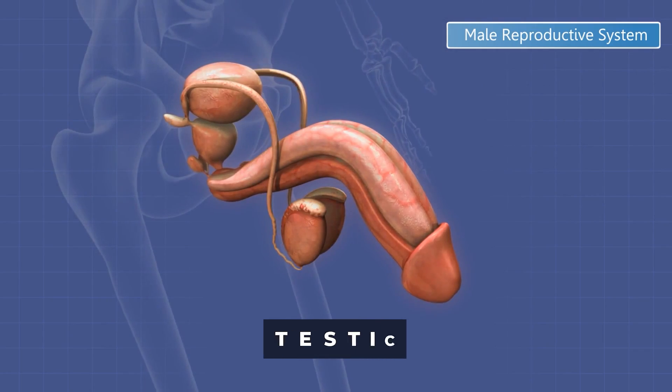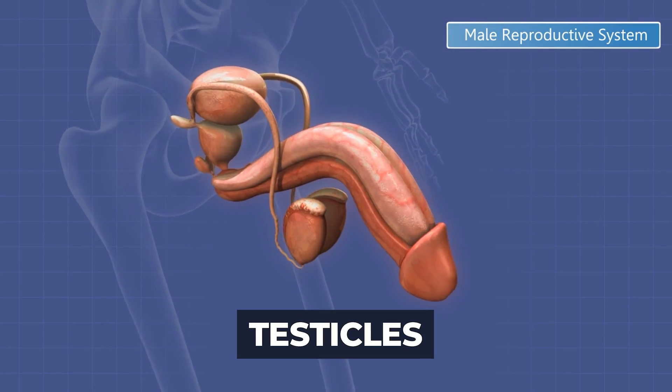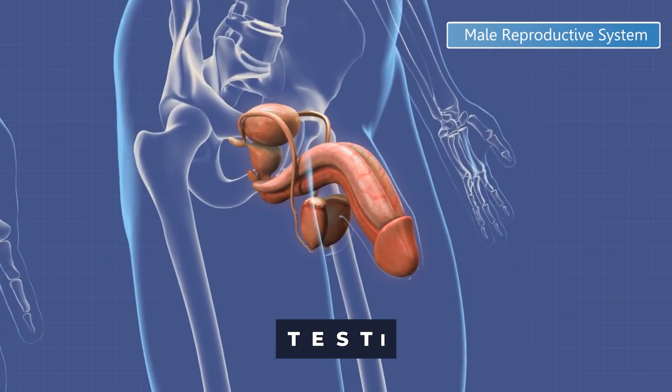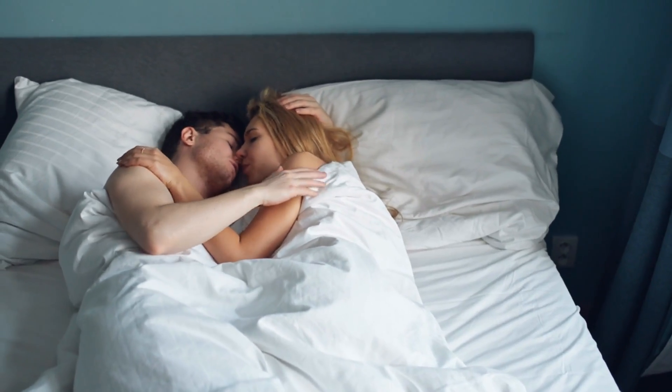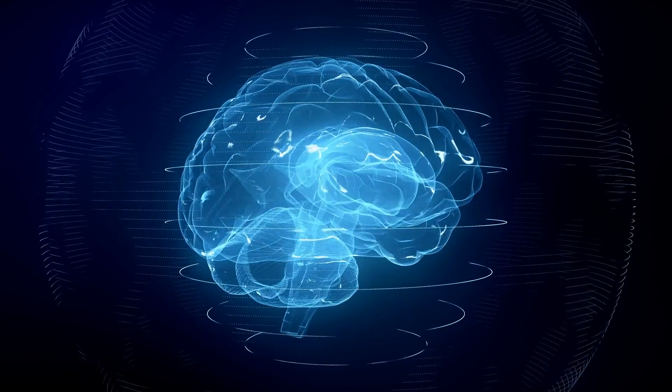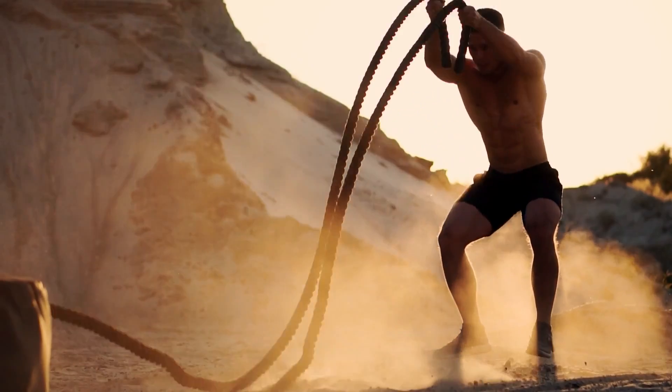That brings us to the testicles, which form testosterone. Testosterone is vital for reproduction and many other functions in the male body, including libido with intercourse, cognitive function, the ability to build muscle, and so much more.